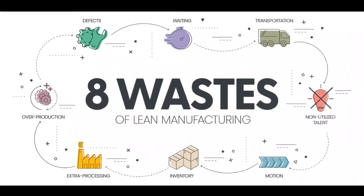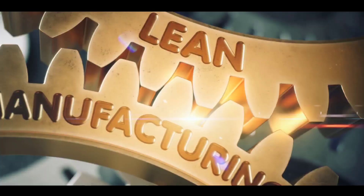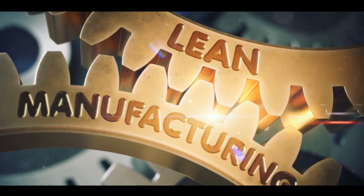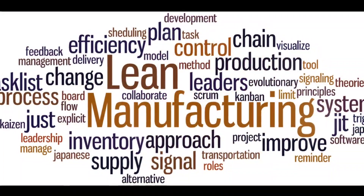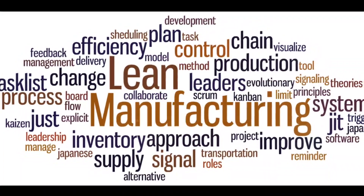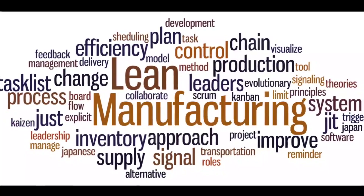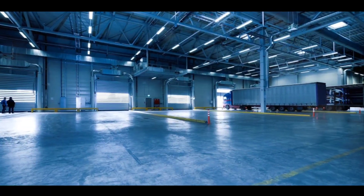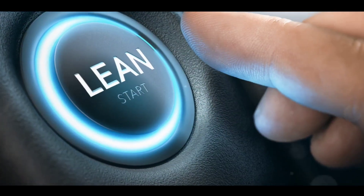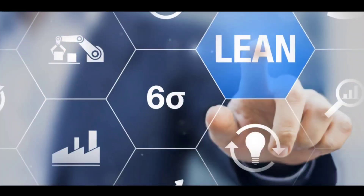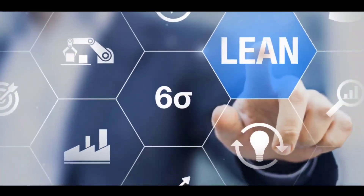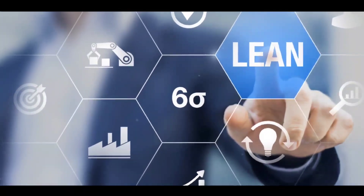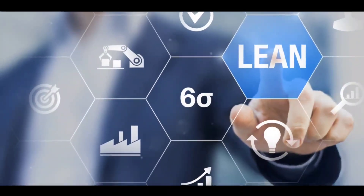It's a philosophy that champions efficiency, streamlining operations to deliver more with less. The real magic of lean manufacturing lies in its relentless pursuit of waste reduction. And what are these wastes? They are eight in total, each one a potential roadblock to smooth operations.